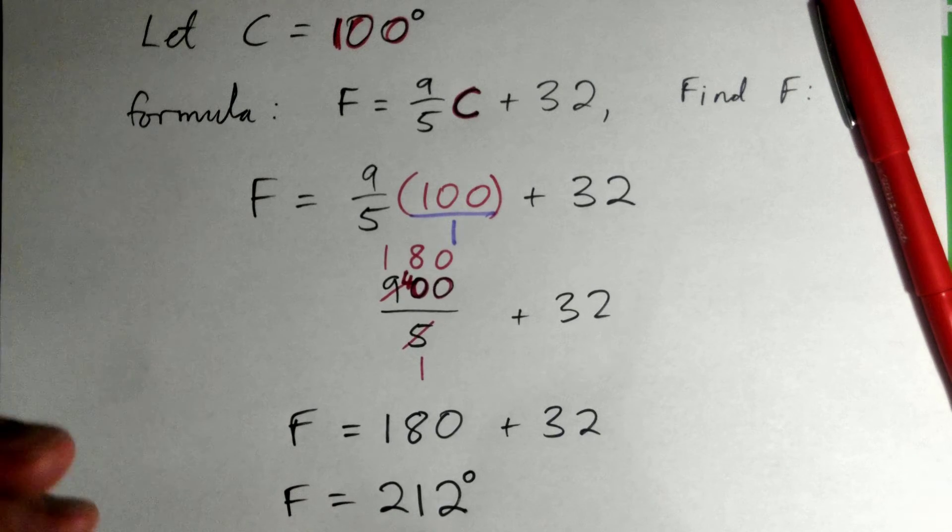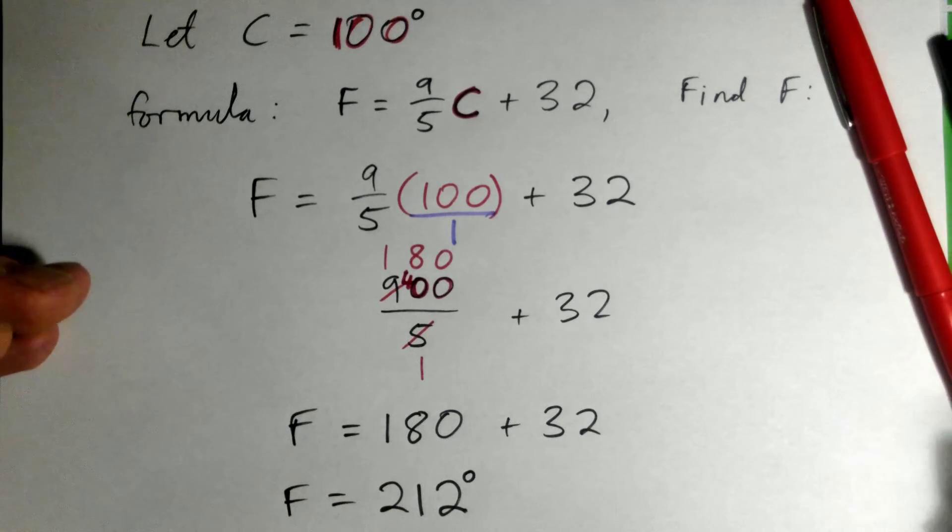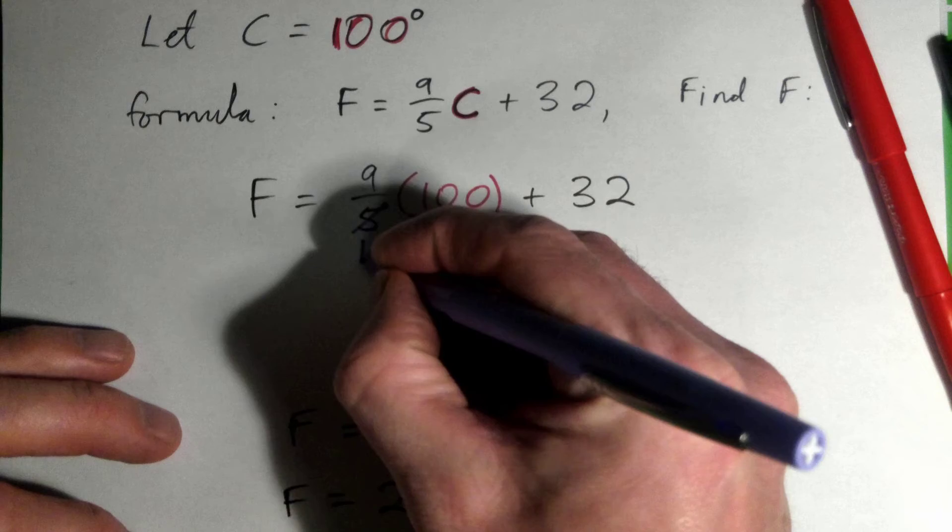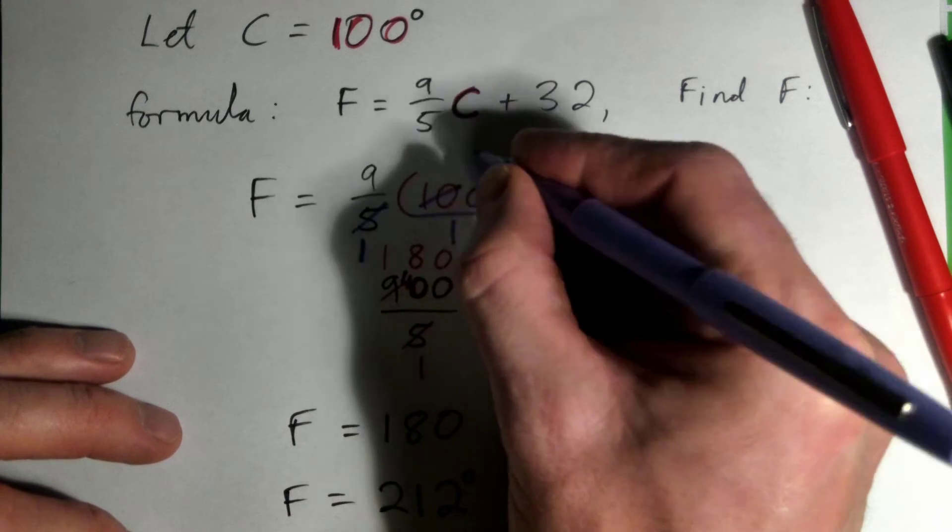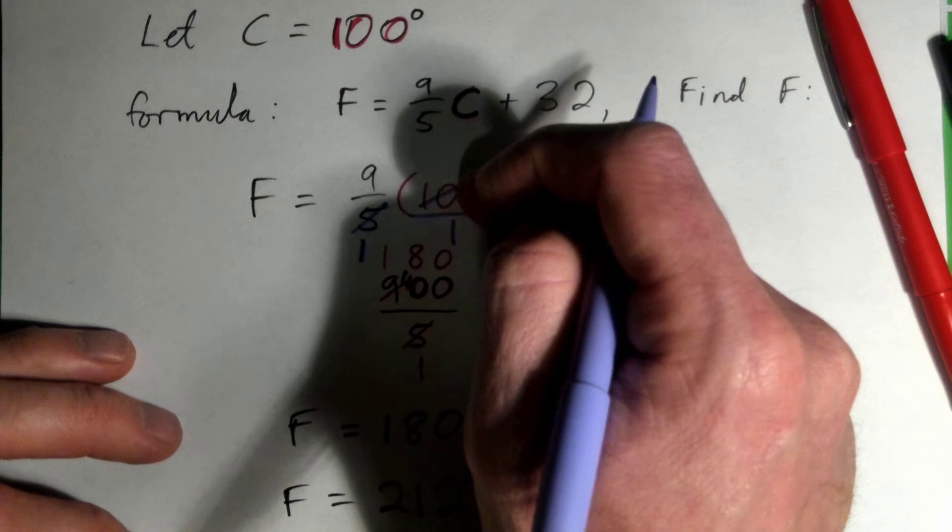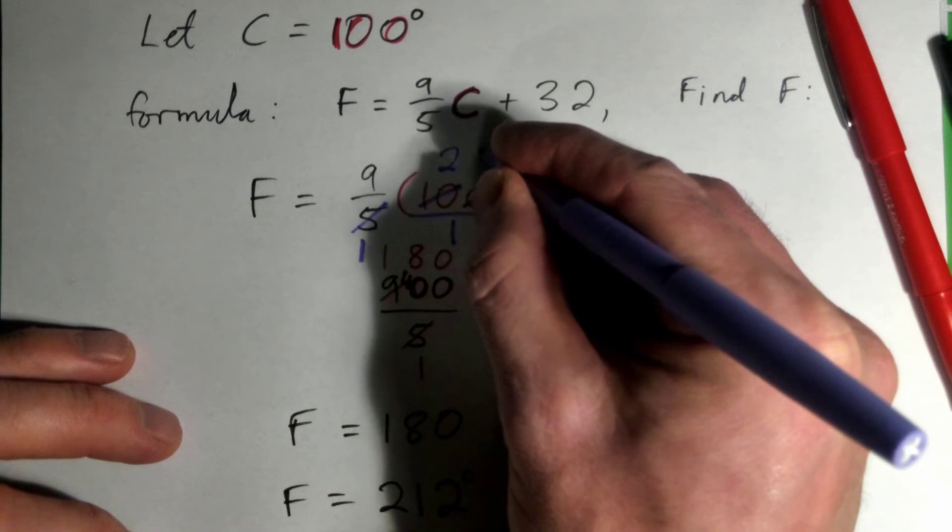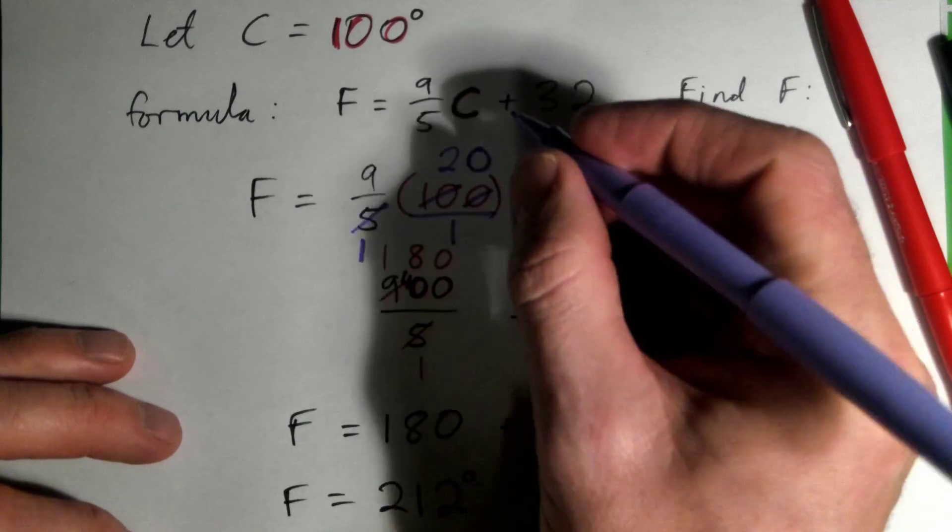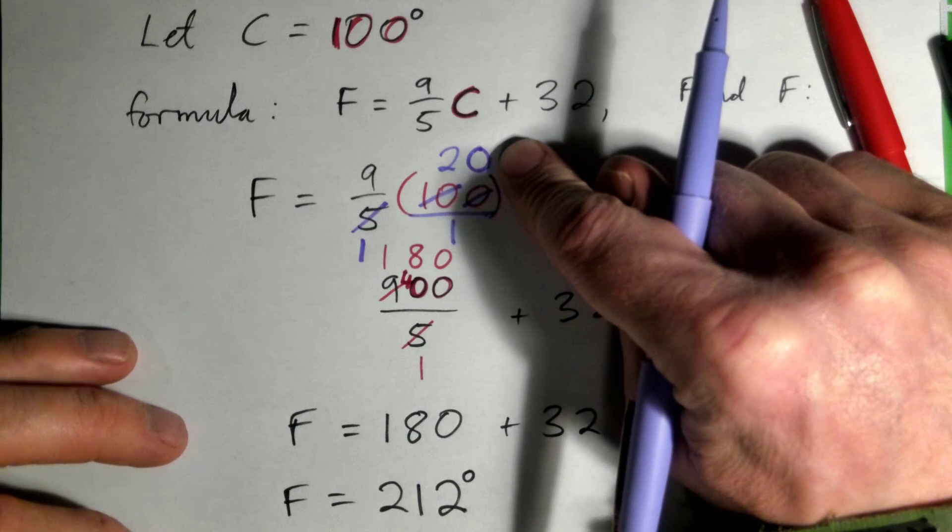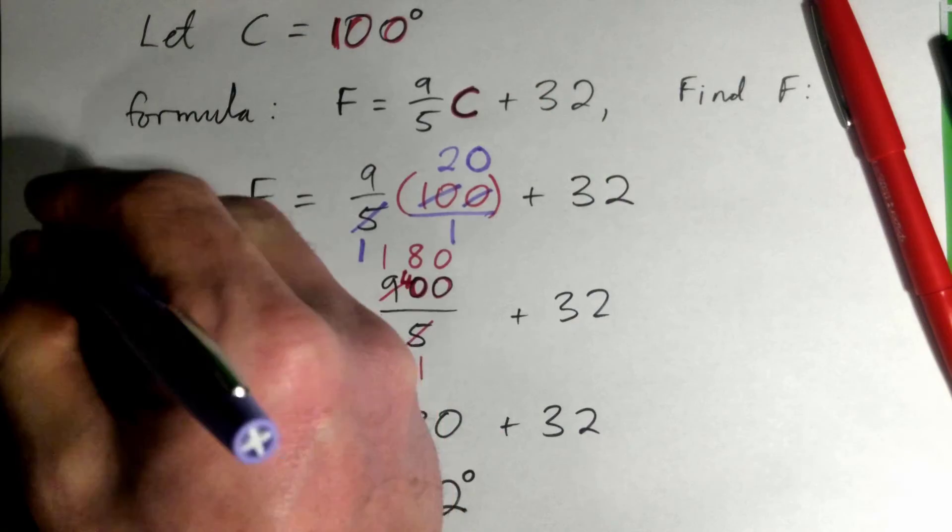Now, the other way of doing this, by the way everybody, is we could have cross cancelled. We could have gone 5 into 5 goes once, 5 into 10 goes, what's 5 into 10? Twice. 5 into 0? Zero. What's 9 times 2? What's 9 times 20?